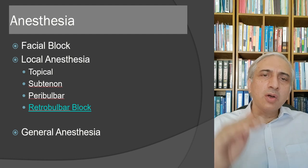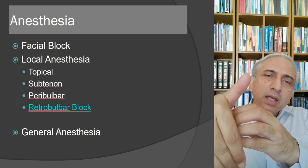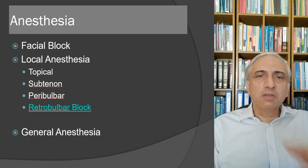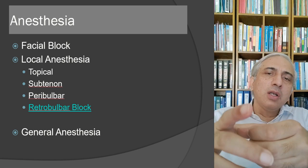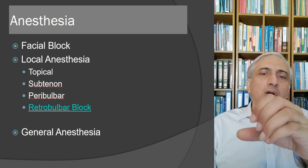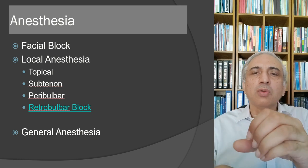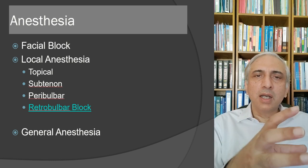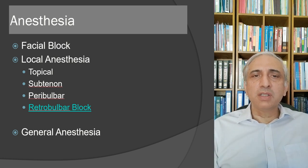Nowadays, topical anesthesia with drops is preferred for phacoemulsification. This can be augmented by sub-Tenon's anesthesia — a cannula is slid past the globe into the intraconal space. Alternatively, peribulbar block involves injections above and below the eyeball in the periocular area. Retrobulbar block involves an injection through the skin behind the globe into the intraconal space, producing akinesia and anesthesia of the eye.